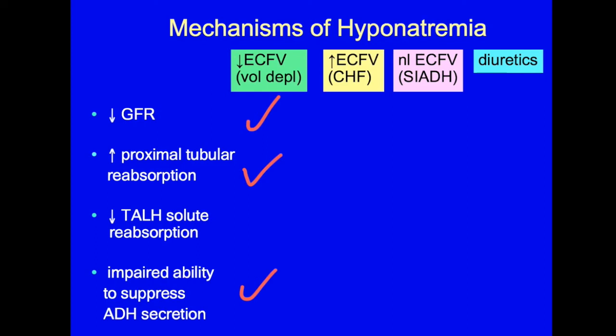Heart failure and other edema-forming states also result in intense vasoconstriction, renin-angiotensin activation, and ADH secretion. SIADH simply does not allow ADH secretion to be turned off ever, and causes problems in that way. And diuretics, such as loop diuretics, impair solute uptake in the ascending limb of Henle or the distal convoluted tubule, and thus impair the ability to make a dilute urine. They may also create some degree of intravascular volume depletion and activate the three mechanisms mentioned earlier.